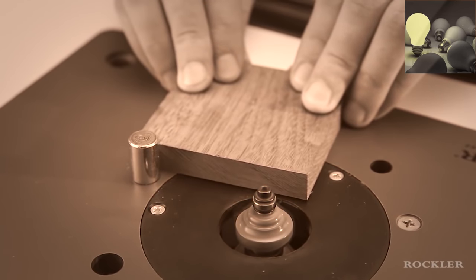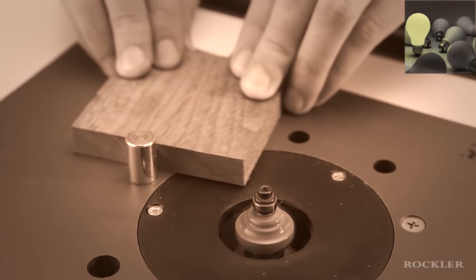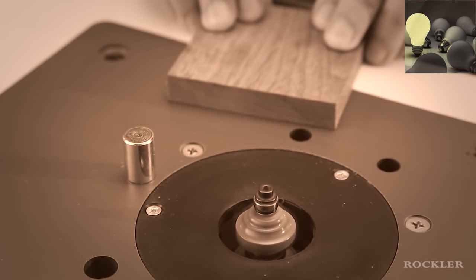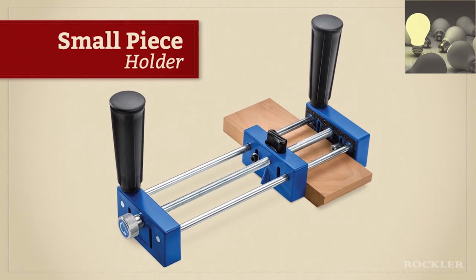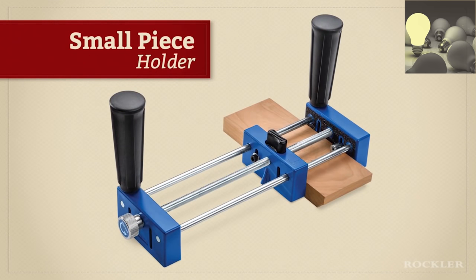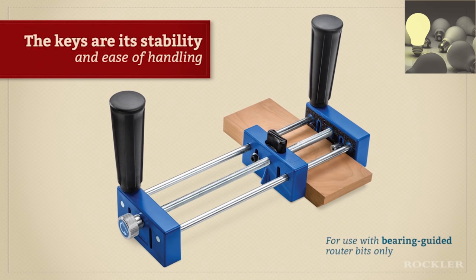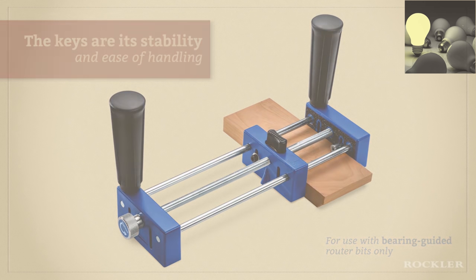If the thought of using your hands to push small workpieces past the bit at a router table makes you shudder, we've got just the thing to set you at ease. The Rockler Small Piece Holder. It securely holds small workpieces to give you the best possible cut results all while keeping your hands far from the cutter. The keys are its stability and ease of handling.